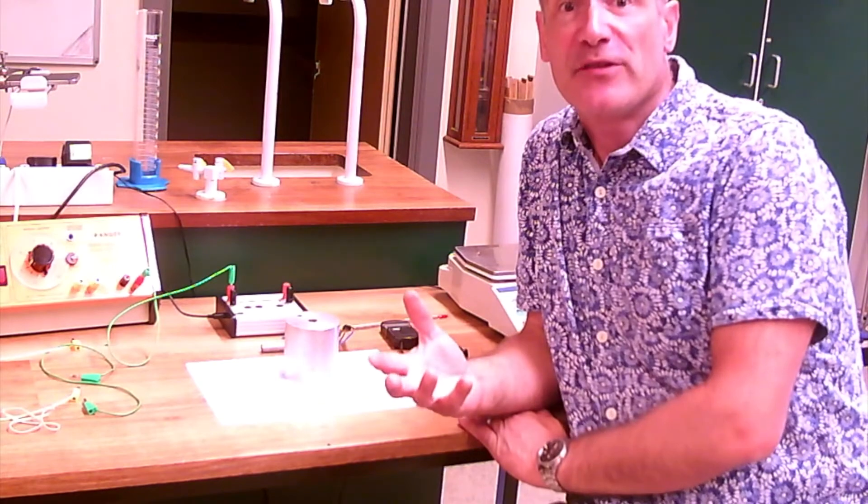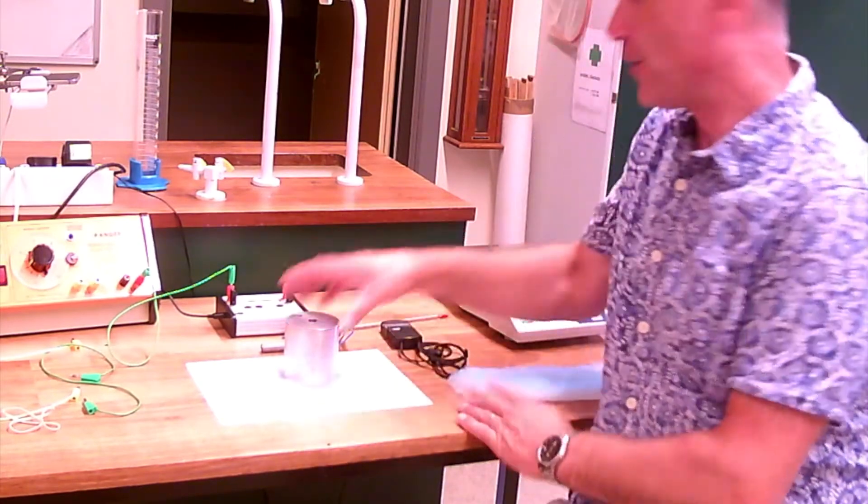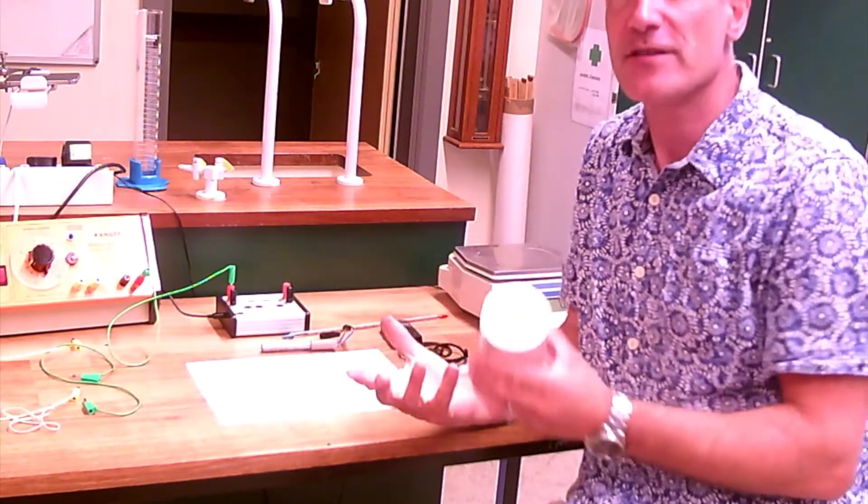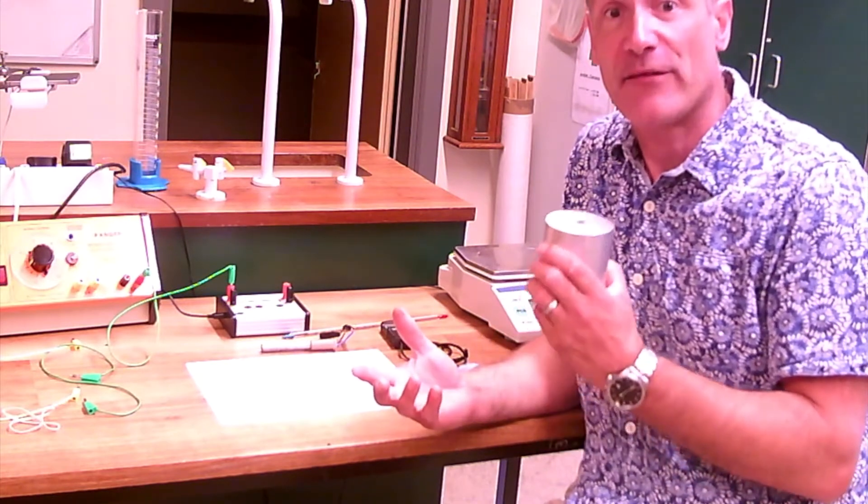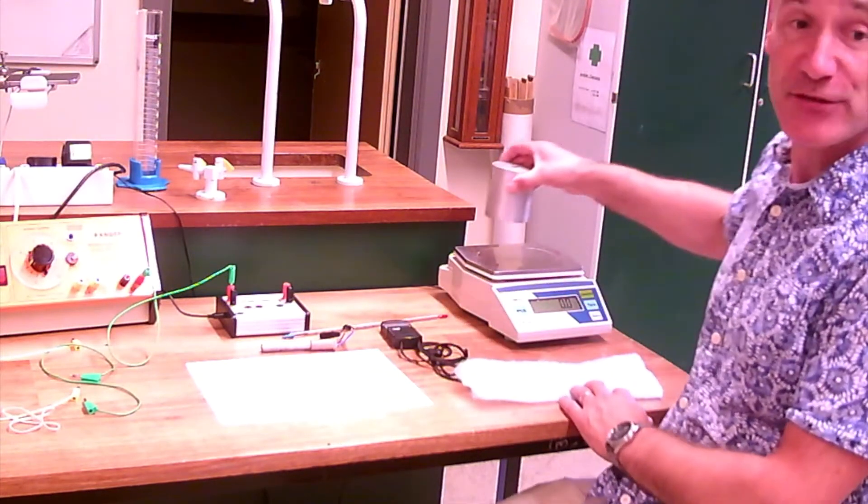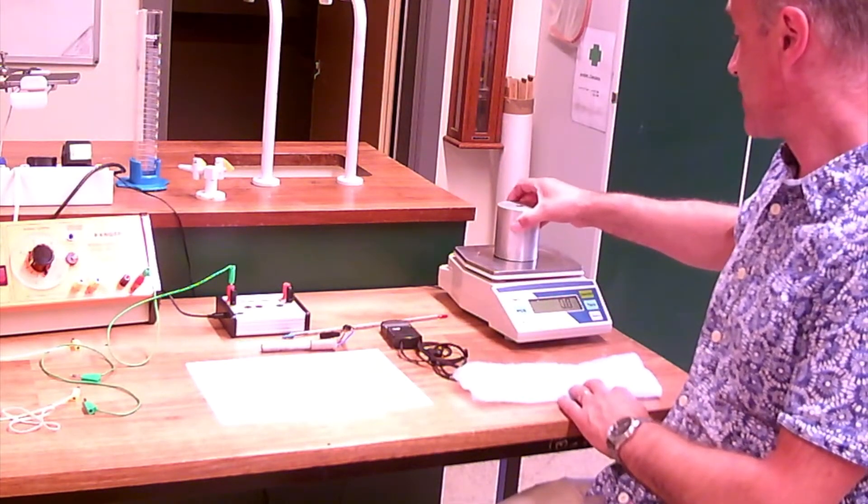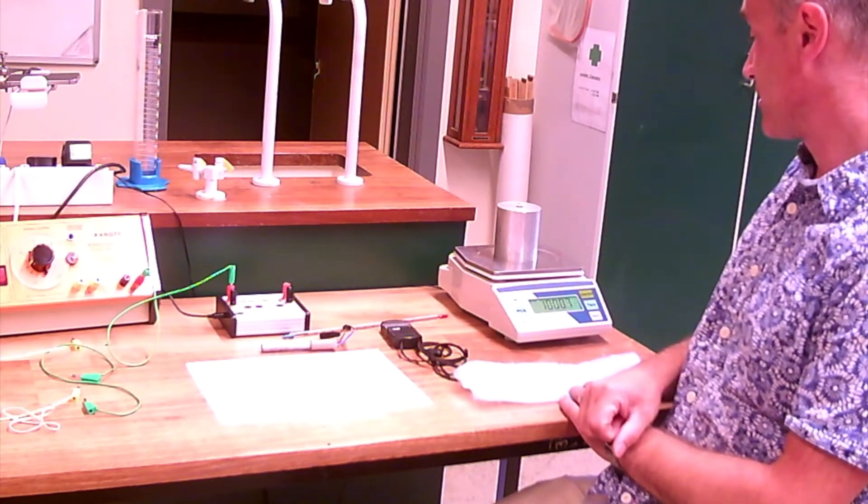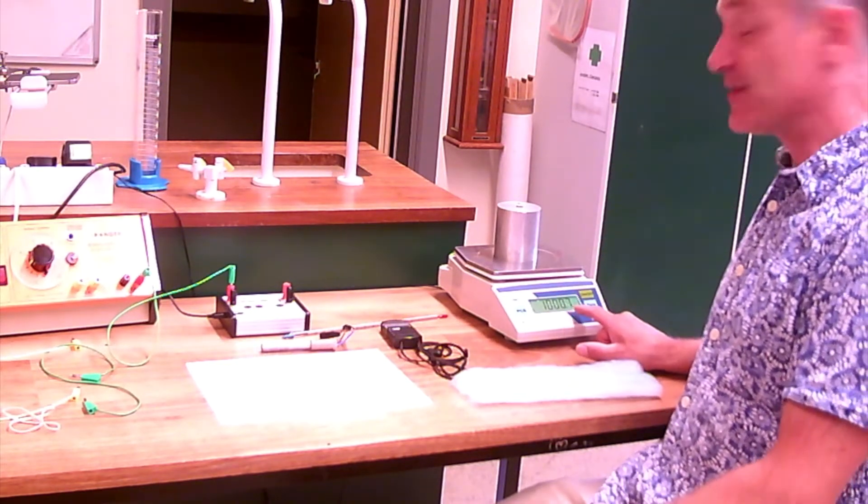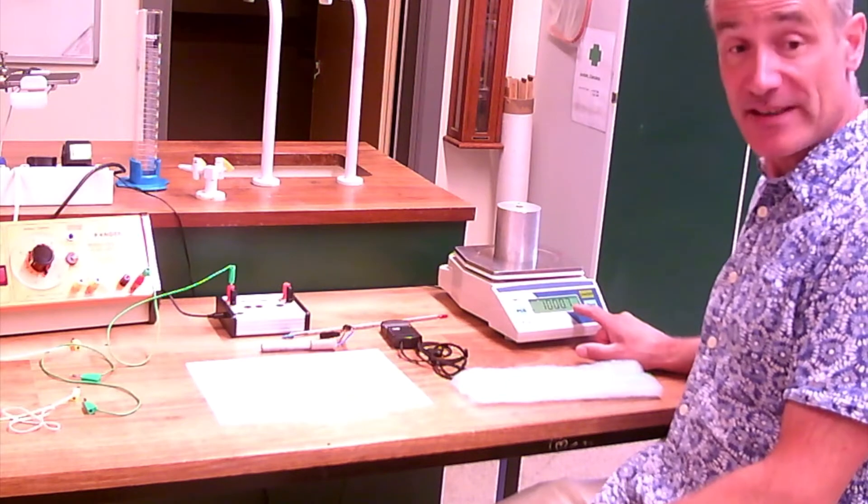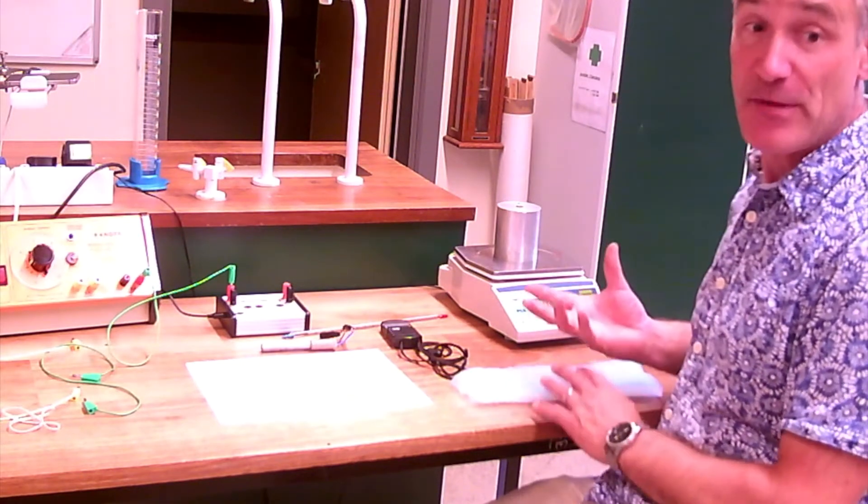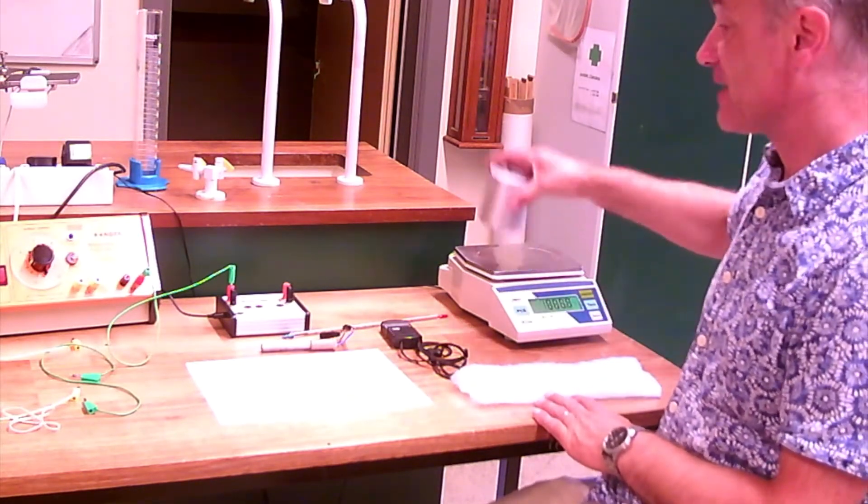What we're going to do today is measure the specific heat capacity of this aluminum block. The first thing to do is work out the mass of the block. So I'm going to use a digital balance here and we're going to measure the mass of the block. That's 1007 grams, so that's one kilogram with an experimental error. So we're going to count that as one kilogram.